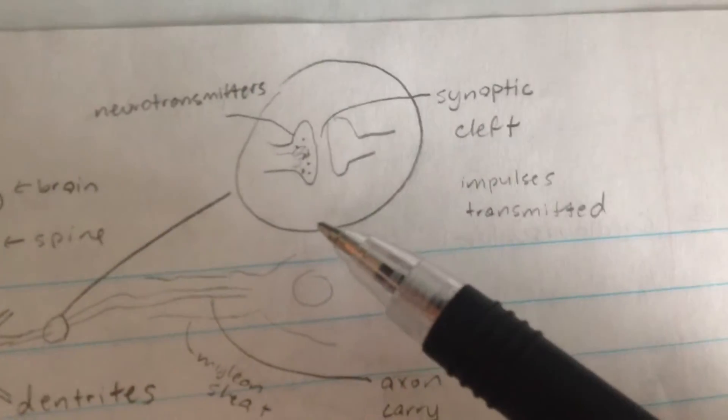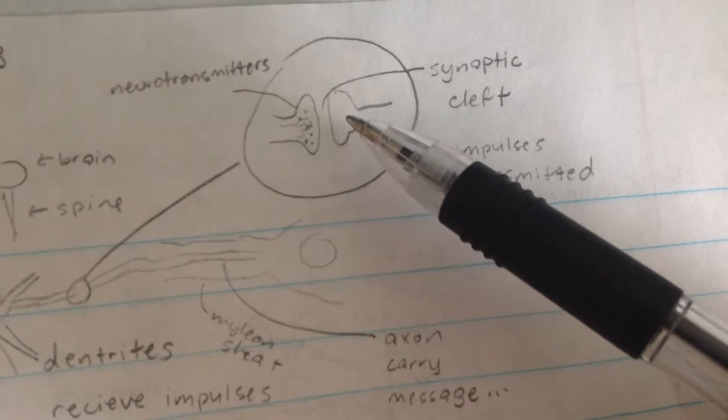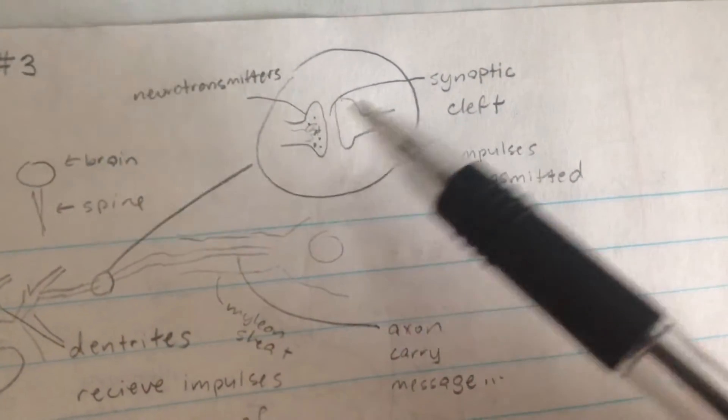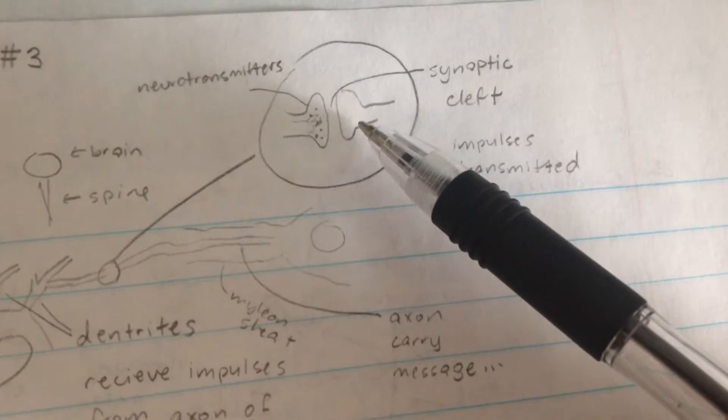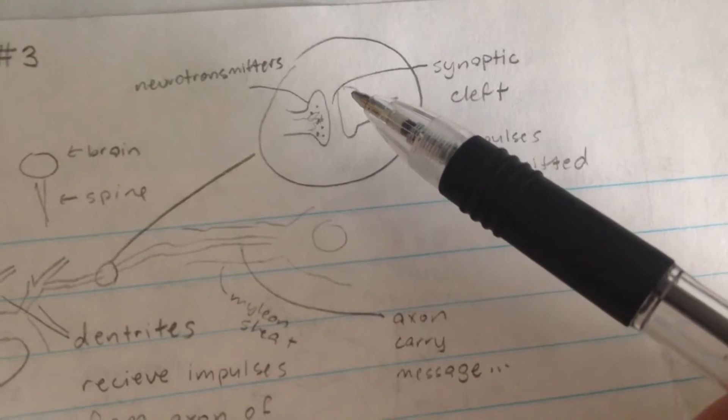So we have a closer look at the connection over here, and we see that this is the presynaptic cleft, this is the postsynaptic cleft, because you're sending a message from the right side to the left side.